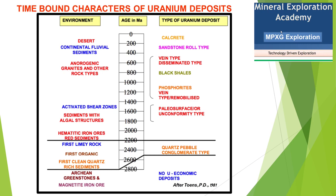This is an important time-bound character of uranium. In rocks of Archean age, we do not find uranium. Around 2,800 million years ago, the oldest rock for uranium mineralization is the quartz pebble conglomerate — an unconformity-type deposit. In the Witwatersrand of South Africa and in Brazil, we have conglomerates — quartz pebble conglomerates — and in these, along with gold, we get the first occurrence of uranium as a deposit.